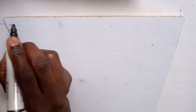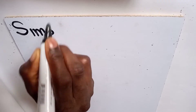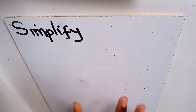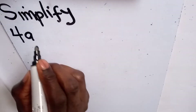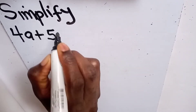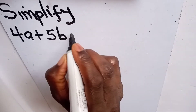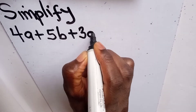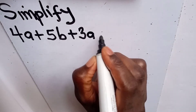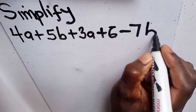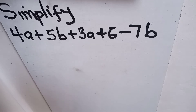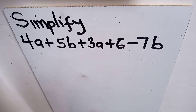Simplify the algebraic expression: 4a plus 5b plus 3a plus 6 minus 7b. Given this algebraic expression to be simplified, you first have to group like terms.